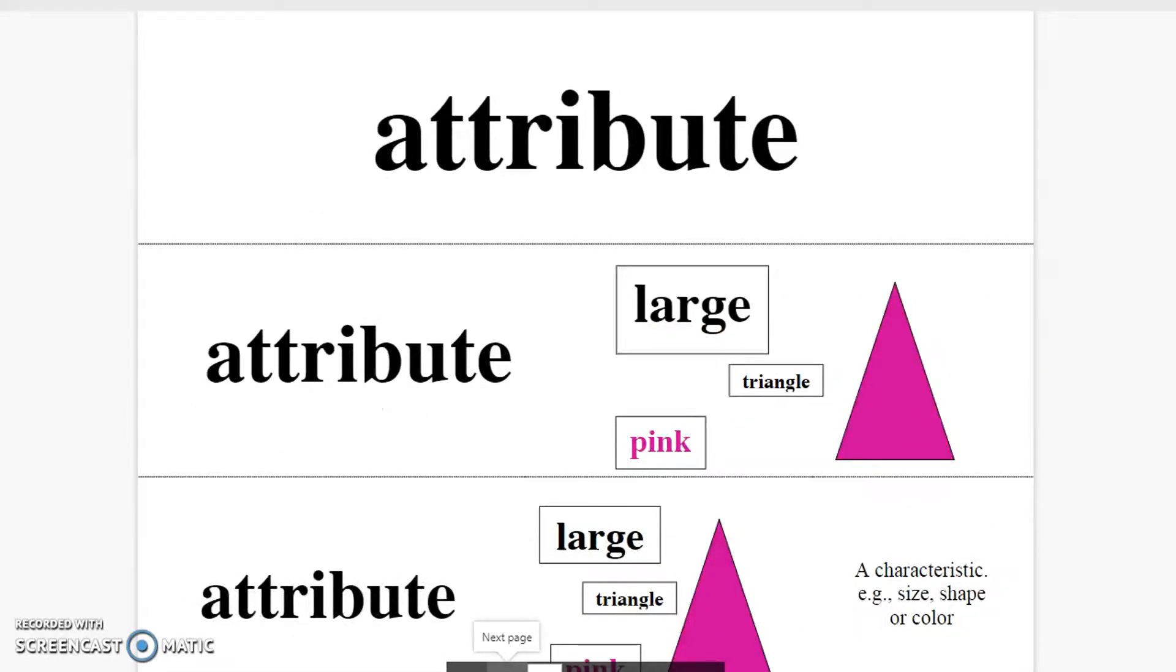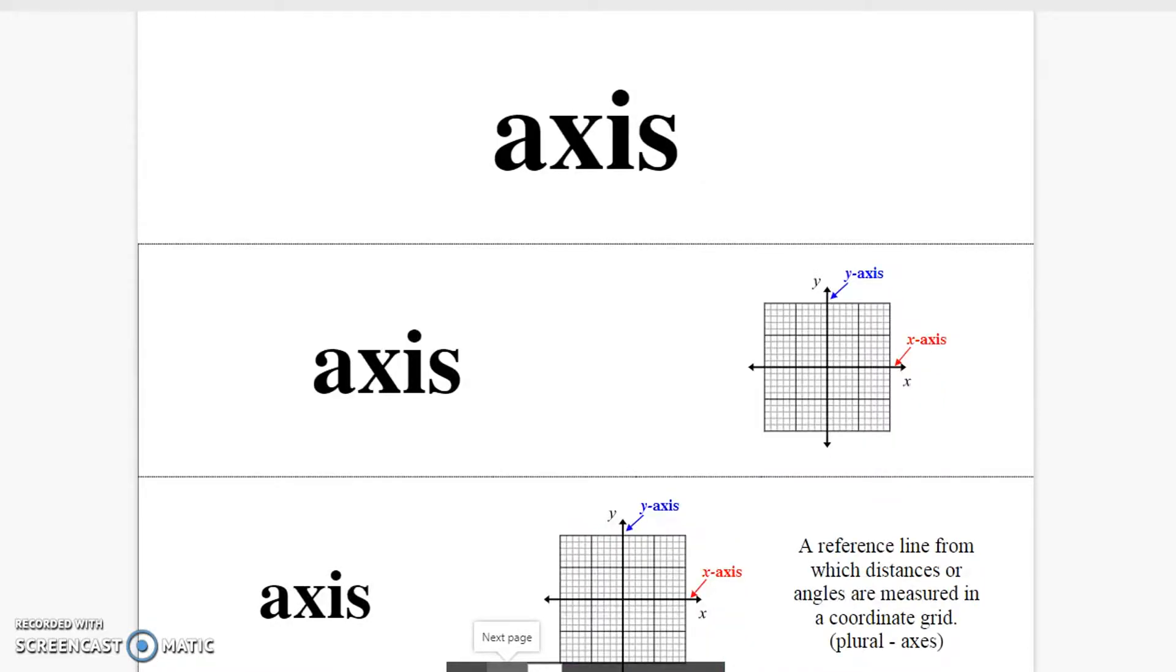Attribute. A characteristic like size, shape, or color. Axis. A reference line from which distances or angles are measured in a coordinate grid.